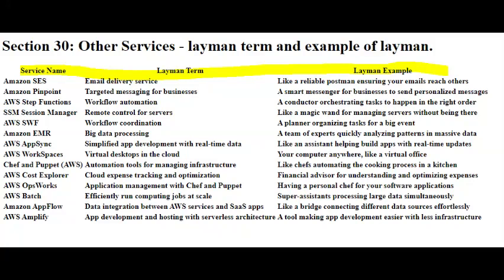Imagine you have a favorite coffee shop that knows your preferences. They use Amazon Pinpoint. If they have a new coffee blend, Pinpoint helps them send you a personalized message, maybe through a mobile app notification, letting you know about it. If you haven't visited in a while, Pinpoint might send you a special offer to entice you back, using the communication method you prefer, whether it's email, SMS, or an app notification. Just like your coffee shop uses Amazon Pinpoint to reach out to you in a way that suits you best, businesses use it to communicate effectively with their customers, ensuring the messages are personalized and delivered through the right channels.